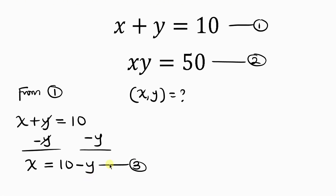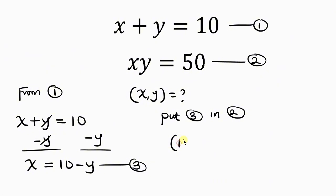Our next step will be to substitute equation 3 into equation 2. For equation 2, x times y equals 50, and from equation 3, x is 10 minus y. So we put that in place of x: (10 minus y) times y equals 50.